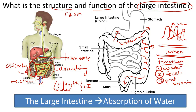The second function of the large intestine has to do with egestion, which takes place in the rectum. Egestion basically means that the rectum, after holding the solid waste of your feces, eventually releases it through your anus.